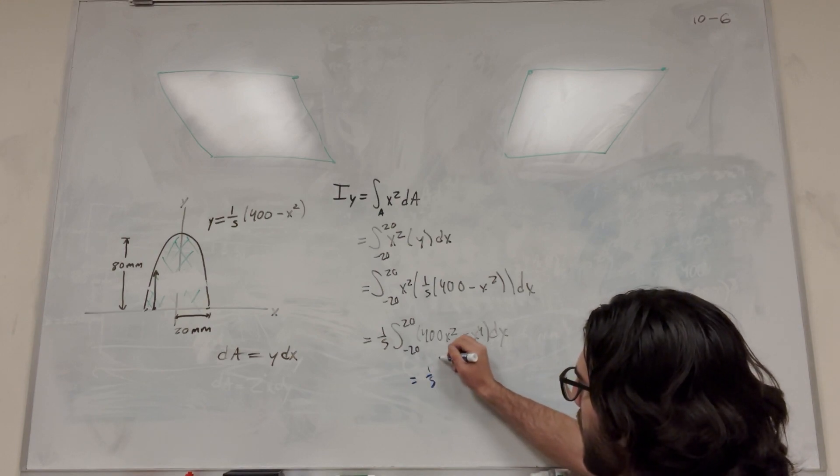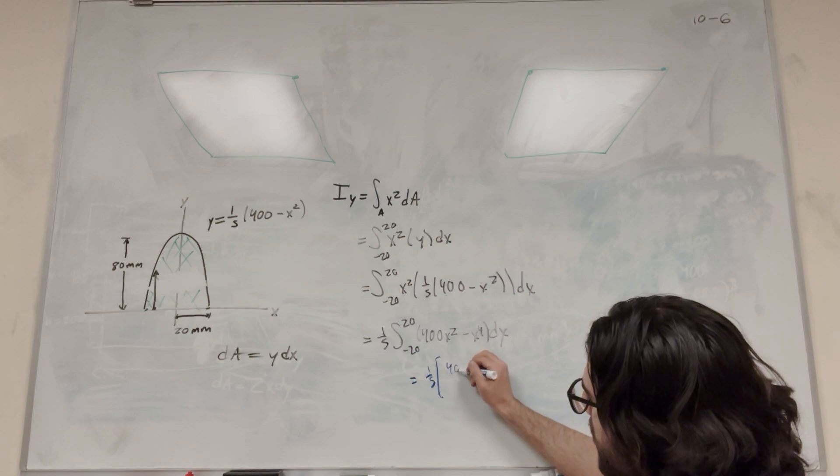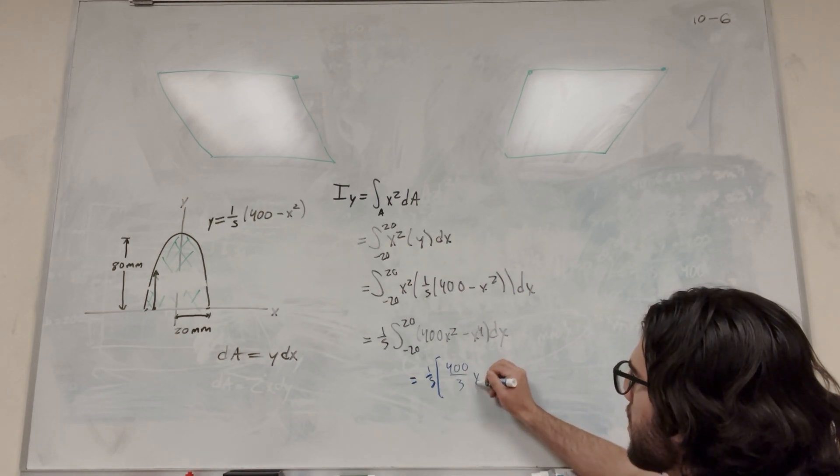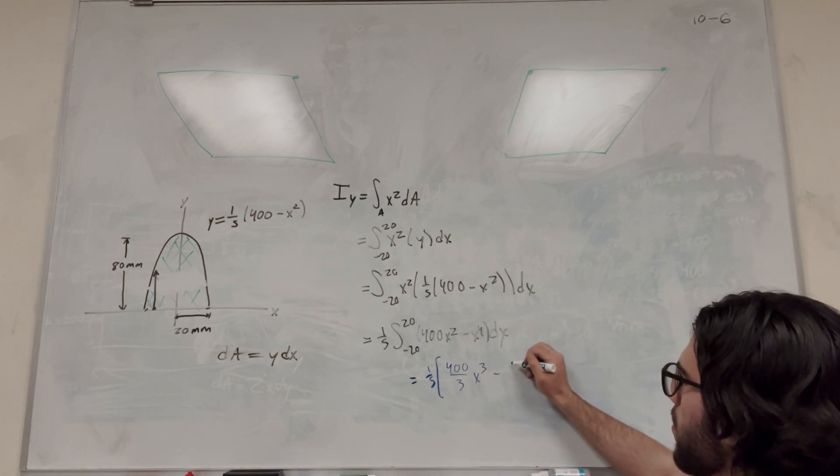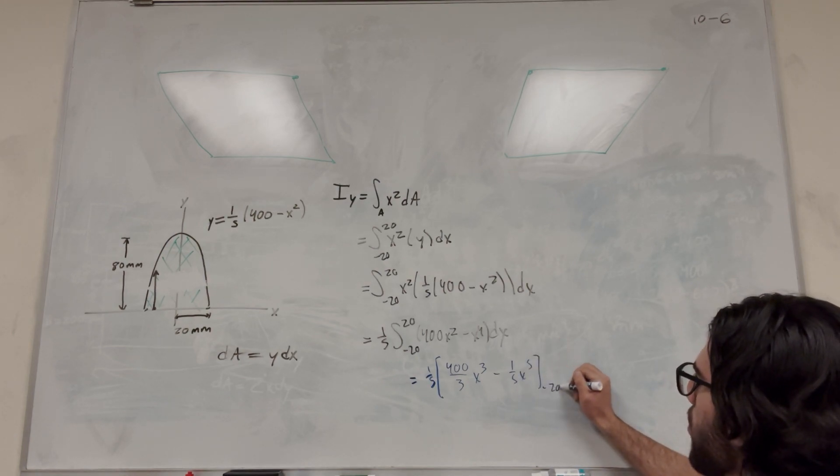So the one-fifth stays out front. So this 400 becomes 400 over 3x to the third, and then this becomes 1 over 5x to the fifth, and its bounds are from negative 20 to 20.